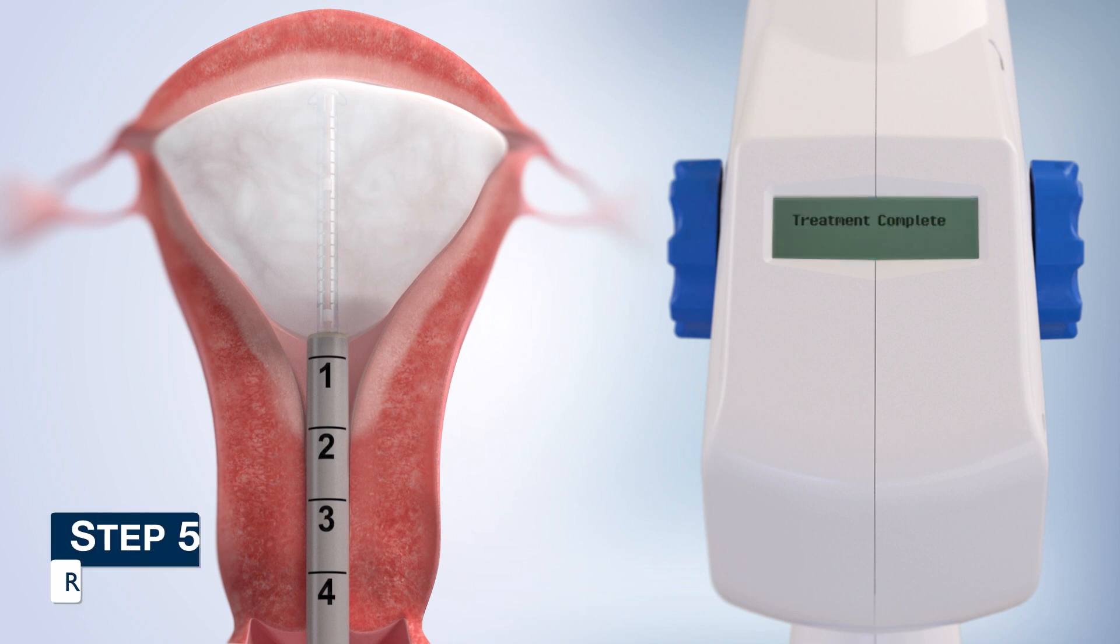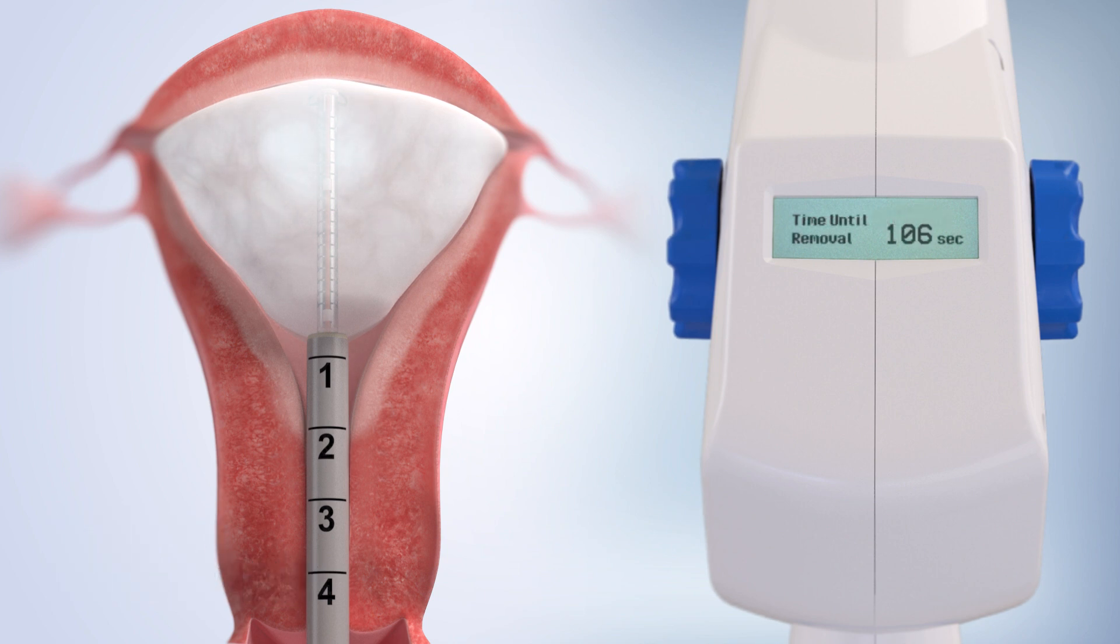Step 5. When prompted, unlock the vent lock then slide the vent tab to initiate the device removal countdown. The Serene Device applies a vacuum within the liner to aid in removal.